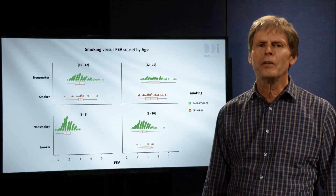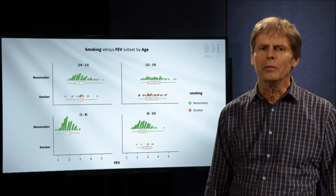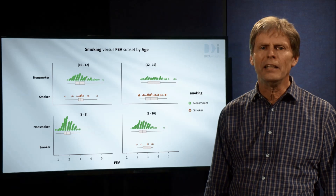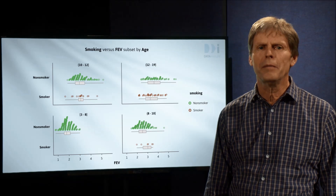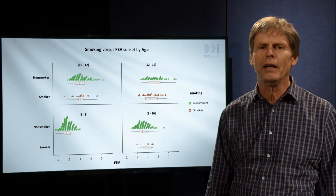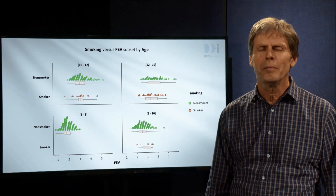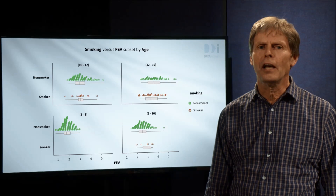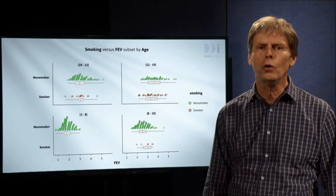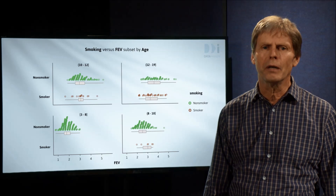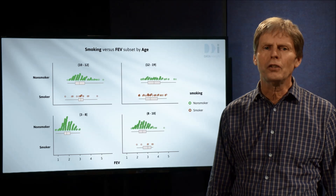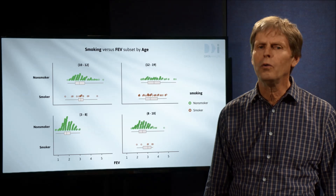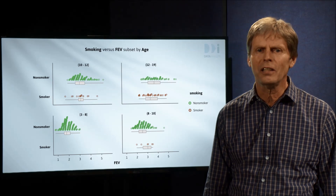Random assignment to treatment groups is the most reliable way people know for balancing groups and making fair comparisons, but it's by no means perfect. In the next video we'll show you shortcomings of randomisation, but those demonstrations of the problem also hold the seeds of the solution.